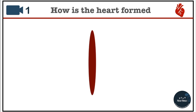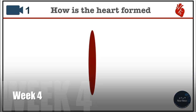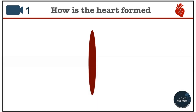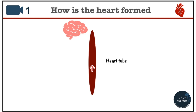Let's see how the circulatory system forms. The heart starts beating spontaneously around week four. So before that, the heart basically looks something like this. This is known as the heart tube. The main goal of the heart tube is to provide oxygenated blood to the brain, so blood in the heart tube flows in this direction.